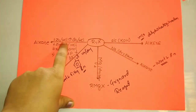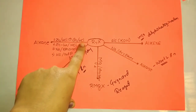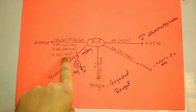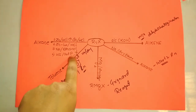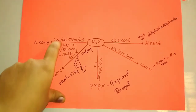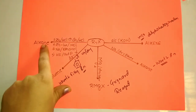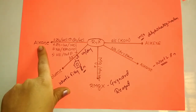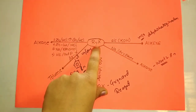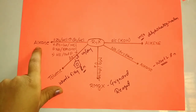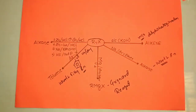The last set of reactions involves reducing agents: zinc with HCl, tin with HCl, zinc-copper couple with HCl, sodium with ethyl alcohol, or hydrogen iodide with red phosphorus. Any of these reagents when used with alkyl halide gives the respective alkane as the product.